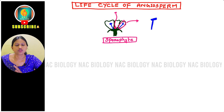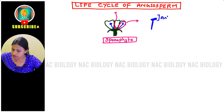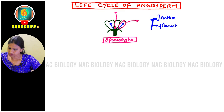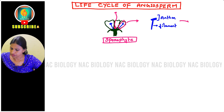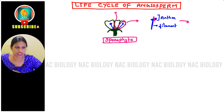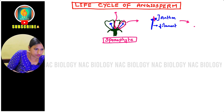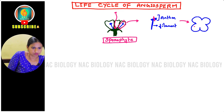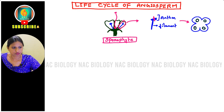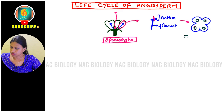As we all know, the stamen consists of two parts: one is the anther and the other is the filament. Now if we take only the anther part and cut a transverse section (TS), we can see its internal structure — this is the TS of the anther.